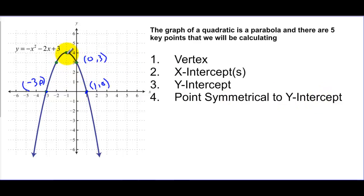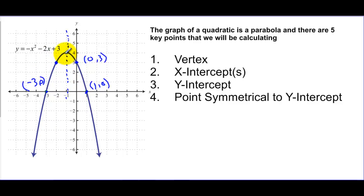The point symmetrical to the y-intercept: if you notice, my y-intercept is (0, 3). My axis of symmetry is that dotted line that travels right here, and if I go to the other side of that line, I have this other point over here. So we're going to be figuring out what all these points are — vertex at the top — and if I graph these five points, I get that nice U-shaped parabola.